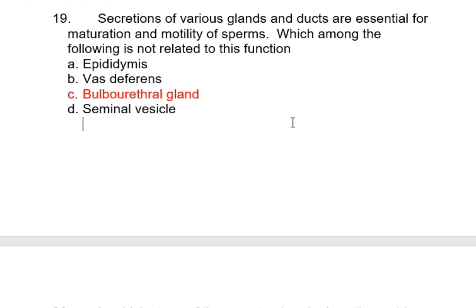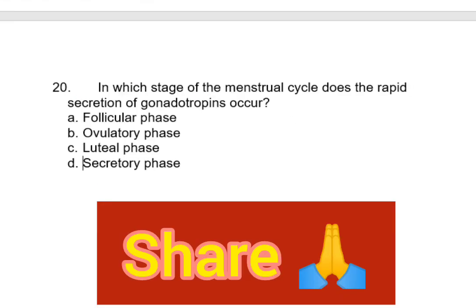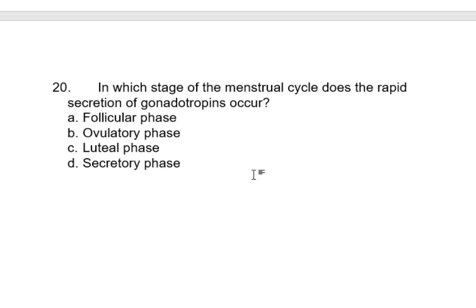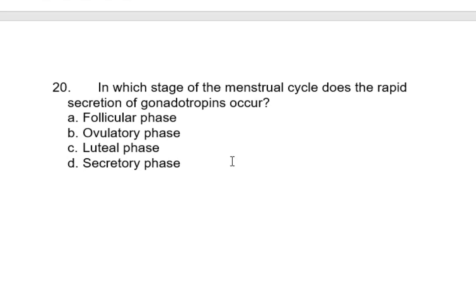In which stage of the menstrual cycle does rapid secretion of gonadotropins occur? It is during the ovulatory phase, where it leads to an LH surge — a rapid secretion of luteinizing hormone — which causes the rupture of the Graafian follicle to release the ovum. So the answer is the ovulatory phase.